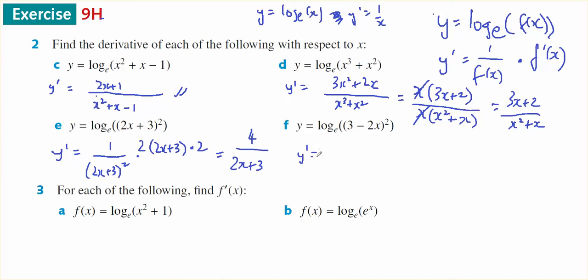In the last one of question number 2, the derivative will be 1 over 3 minus 2x to the power of 2 times the derivative of this, 3 minus 2x to the power of 1, times minus 2. On the top, I've got negative 2 times 2, so negative 4. That will cancel with one of those to leave 3 minus 2x.